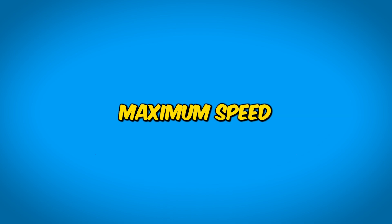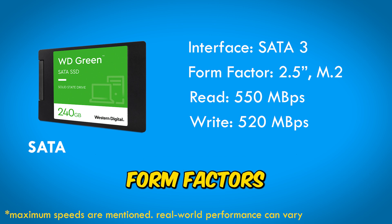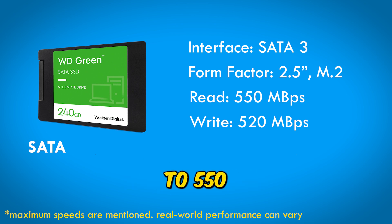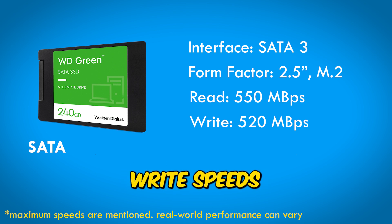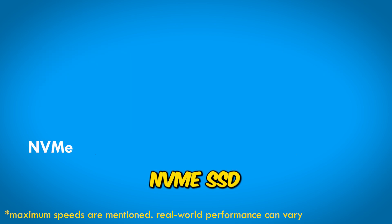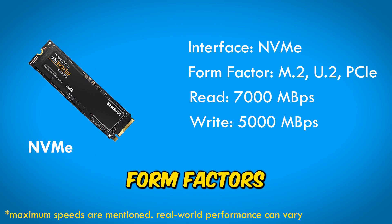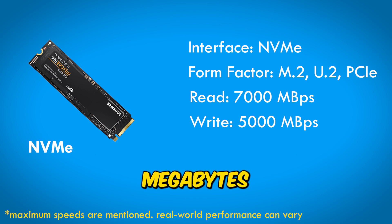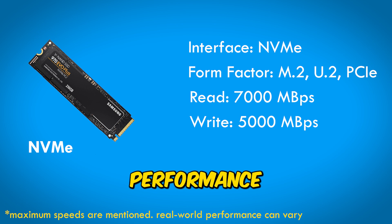Let's quickly compare these types based on interface, form factor, maximum speed, and typical applications. SATA SSDs, with SATA 3 interface and 2.5" and M.2 form factors, offer up to 550 MB/s read and 520 MB/s write speeds for consumer devices. NVMe SSDs, featuring NVMe interface in M.2, U.2, and PCIe card form factors, boast up to 7,000 MB/s read and 5,000 MB/s write speeds for high-performance devices.